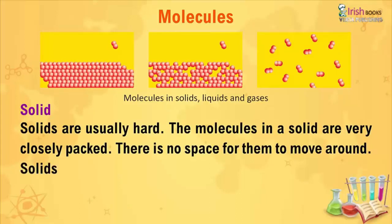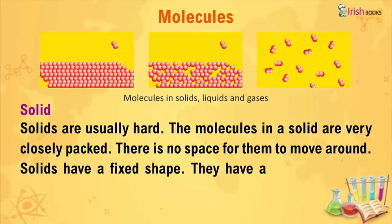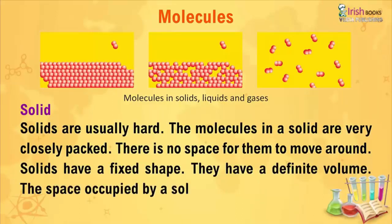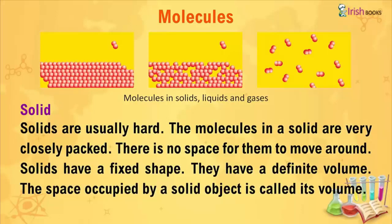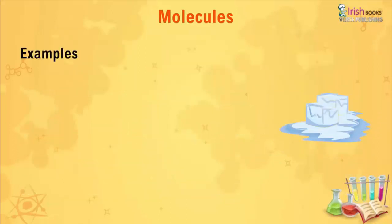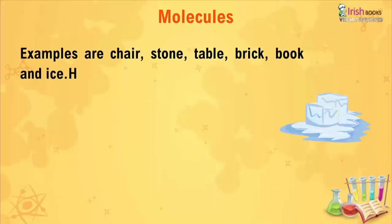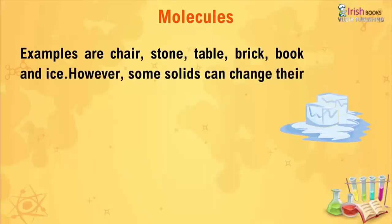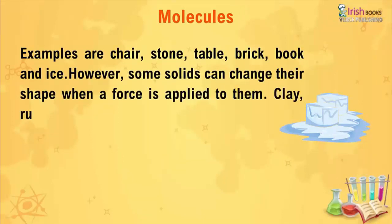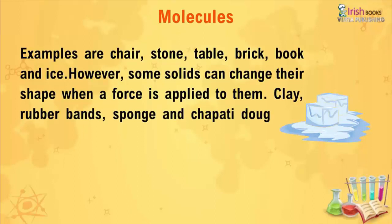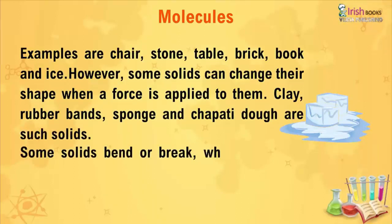Solids are usually hard. The molecules in a solid are very closely packed — there is no space for them to move around. Solids have a fixed shape and a definite, finite volume. The space occupied by a solid object is called its volume. Examples include chair, stone, table, brick, book, and ice.